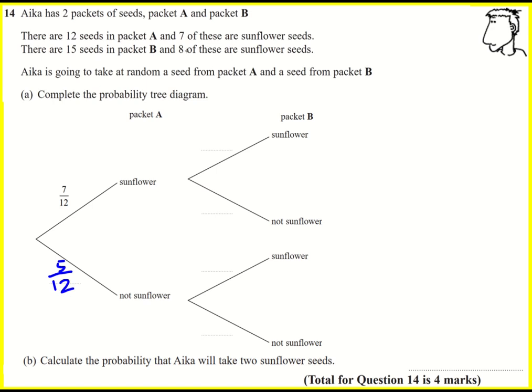For packet B, eight are sunflower seeds and there's 15 in total so it'll be 8 over 15 for the probability, and then seven won't be sunflower seeds so 7 over 15, and then this is repeated.